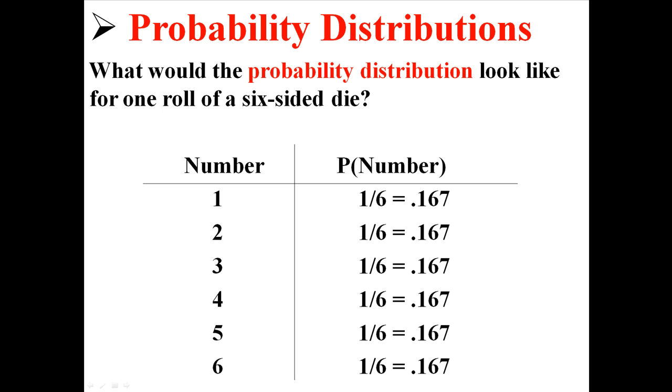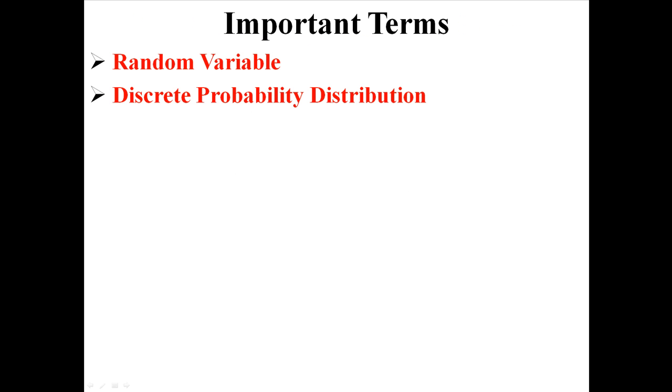You have a one out of six chance of getting a one, or a one out of six chance of getting a four. So that's what the probability distribution would look like for the roll of a six-sided die. Just realize that a probability distribution merely lists all the events that can occur, and the probability of each of those events. And that is a probability distribution for a random variable.